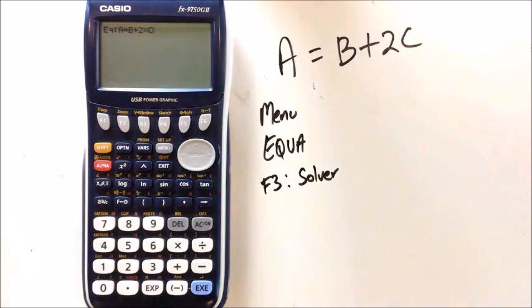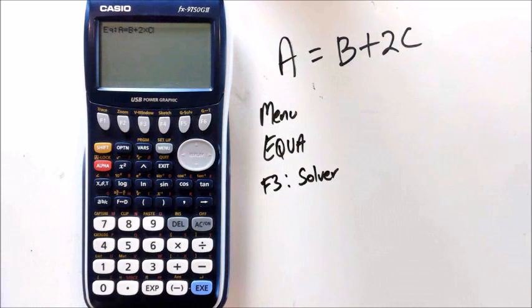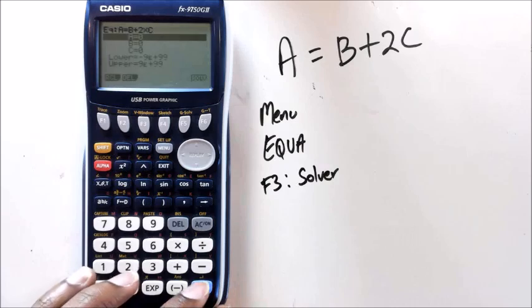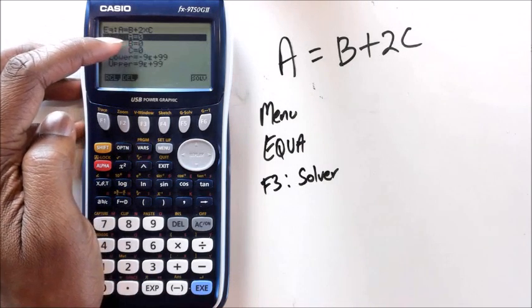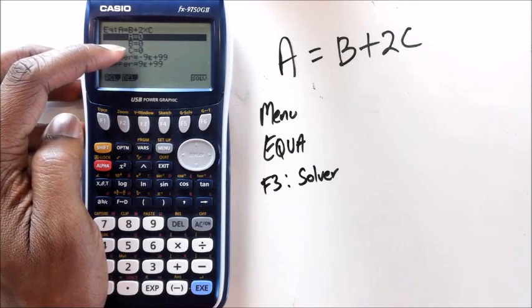Hang on, let me just set the lights. There we go, a lot better. Alright, so there we go, I've got my equation, A equals B plus 2C. Now when I press Enter, you're going to see A equals 0, B equals 0, and C is equal to 0.